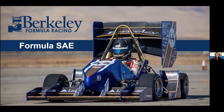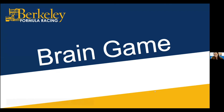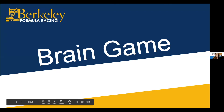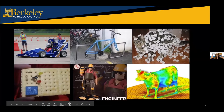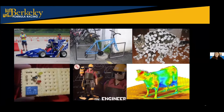So to get started, we have a couple games. They're slightly car-related. We're going to show you some pictures and you're going to tell us what they are. Some are 12th-grade level; some I don't even know, and I'm in college. Including the aerodynamics of a cow — I think I just gave that one away. Drop in the chat if you know what any of these images are.